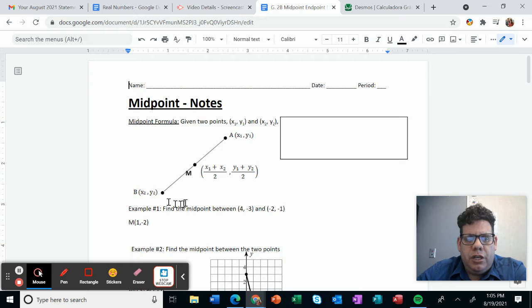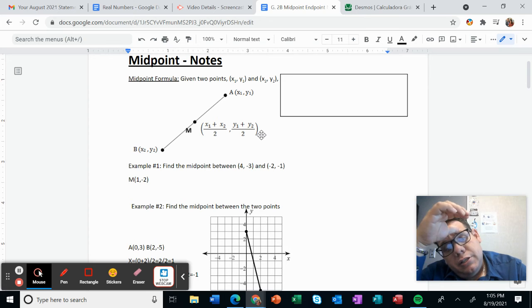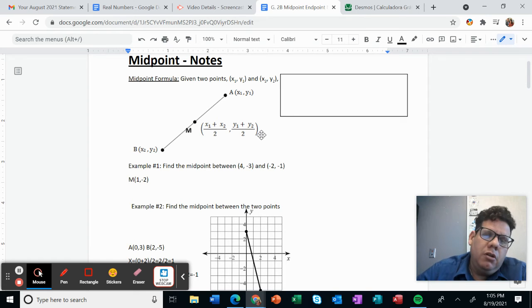So what we are going to do is just find those midpoints, or the coordinates of those midpoints. Starting with the first example, find the midpoint between 4, negative 3 and negative 2, negative 1.